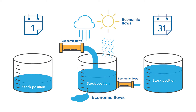Stock positions measure economic value at a specific point in time. Flows measure the changes in economic value over a period of time. It is thus important to have an understanding of what economic flows and stocks are, how they relate to each other, and the different types of stocks and flows. Let us take a closer look at the integration of economic flows and stock positions in macroeconomic statistics.